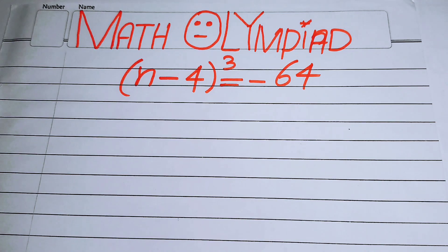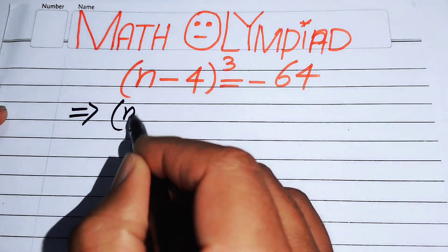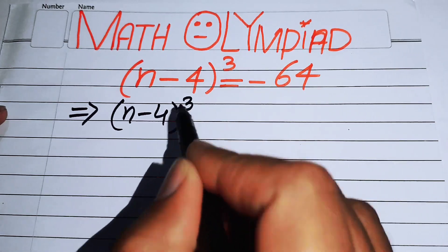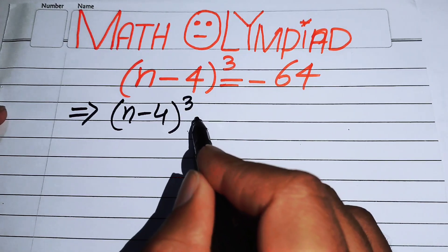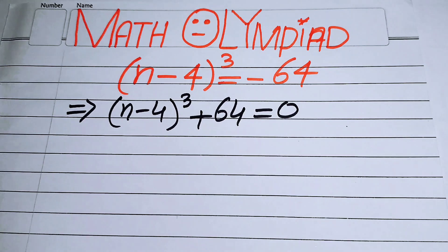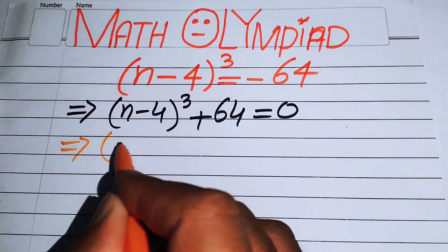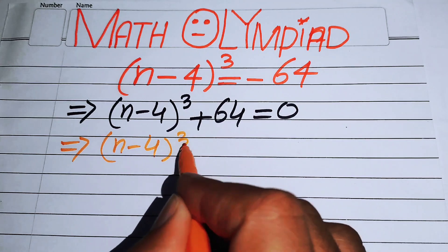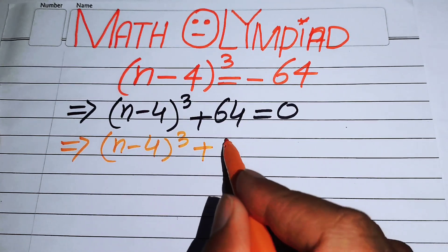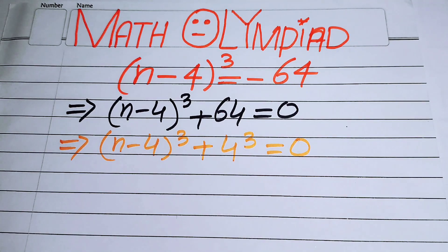The very first thing we are going to do is rewrite this equation. We have (n - 4)³ and we move -64 to the left-hand side to get plus 64 equals 0. So we write this equation as (n - 4)³ plus we write 64 as 4³ equals 0.